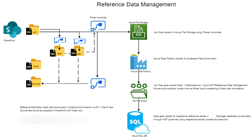Once the file is copied across all folders, a scheduled Power Automate flow executes to copy those files from the respective folder — for example, from UAT — first into the test and dev folders, and then this Power Automate flow copies the file from UAT to Azure File Storage. Once the file lands in Azure File Storage, it is further copied into a virtual machine shared drive by the Azure Data Factory pipeline.